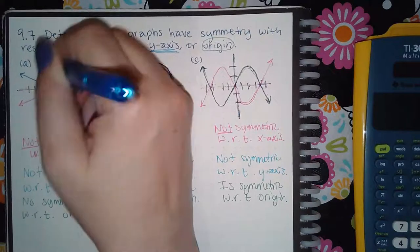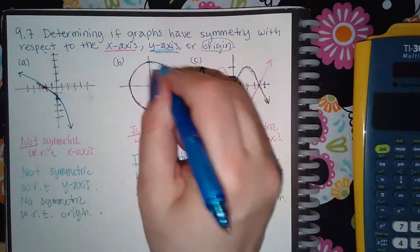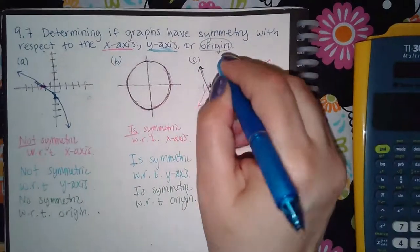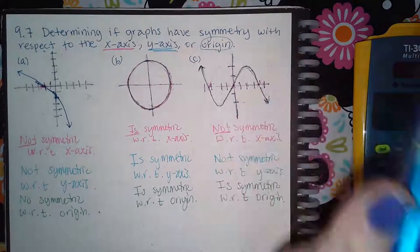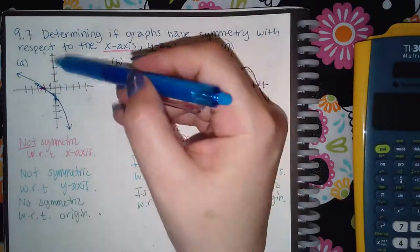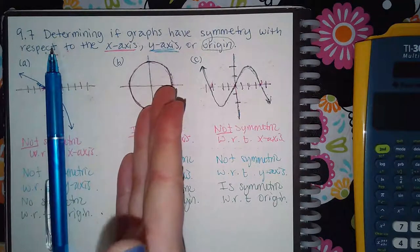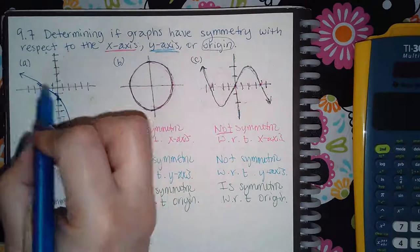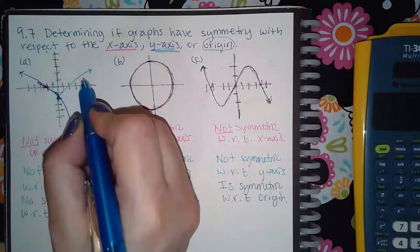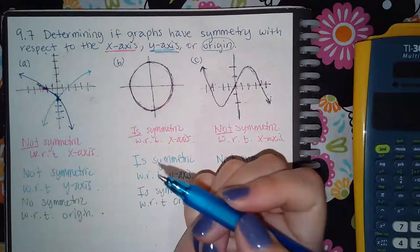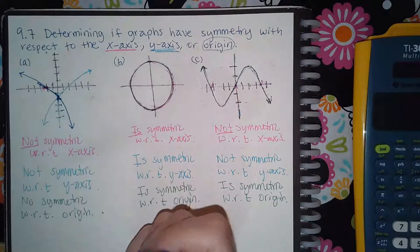Now we move on to the y-axis. I erase the pink — or in your brain just wipe out what you just did — because this is a completely different situation. Now we're going to reflect over the y-axis, which becomes our mirror. The y-axis cuts the graph into two pieces: the left and the right. I take what is to the left of the y-axis and reflect it toward the right. The light blue reflected graph does not land on the original, so graph A is not symmetric with respect to the y-axis.